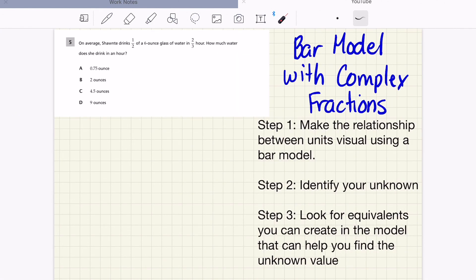So here's a problem and it is from the 2019 state exam. On average, Shantae drinks half of a six ounce glass of water in two thirds of an hour. How much does she drink in an hour? So me just automatically thinking to myself, half of six ounces is just three ounces. And she's doing this in two thirds of an hour.